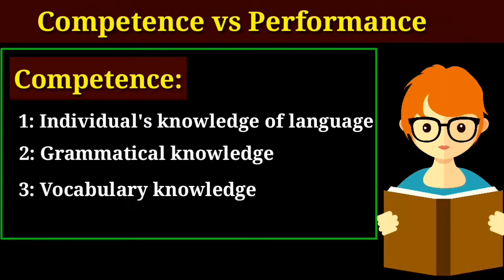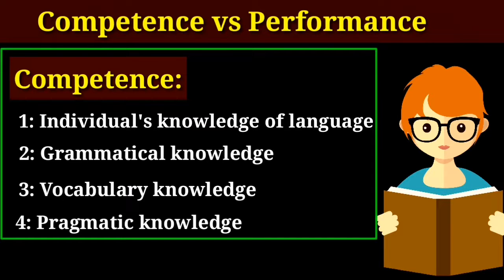We all have knowledge about vocabulary — whether they are synonyms, antonyms, idiomatic expressions, and all these things. Pragmatic knowledge means that a person has knowledge of how language should be used appropriately in a social context. It includes politeness, appropriate register, and different forms of address, because we know how a language should be used in different situations — so we can call it pragmatic knowledge.